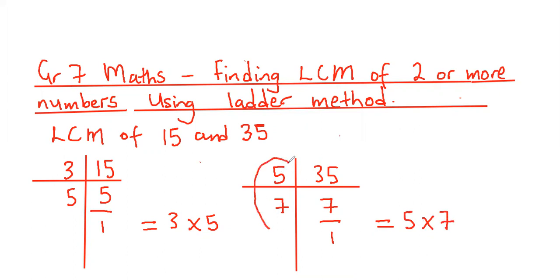Our expressions come from the combination of factors on the left hand side of the ladder. After expressing each number as a product of its prime factors, we are going to combine the two expressions by taking the common factors appearing in both expressions.